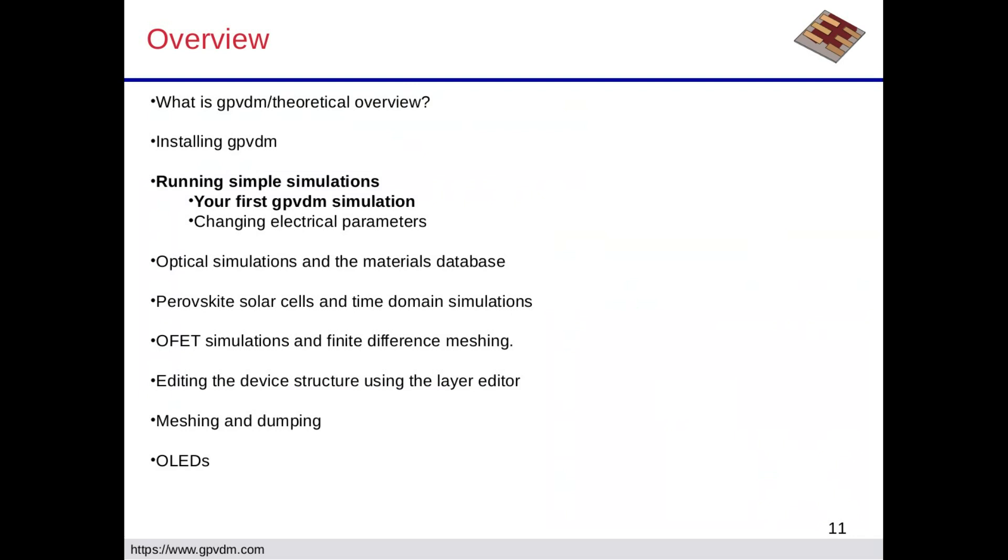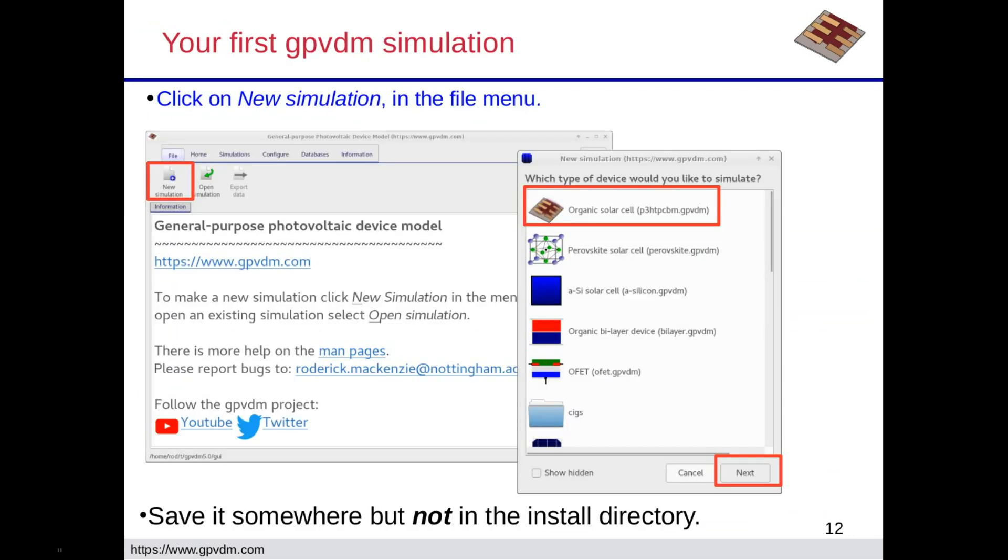So running your first simulations with GPVDM. I think we'll do this like a follow-along thing. If you click new simulation and then click on organic solar cell, select that and then click on next, it should ask you to save it somewhere. If you save it somewhere but not in the simulation directory, save it on the desktop or somewhere like that.